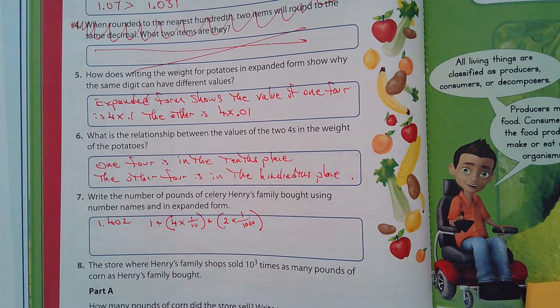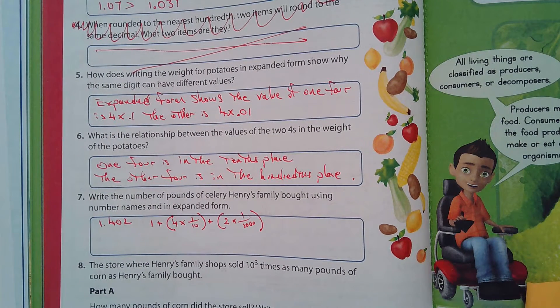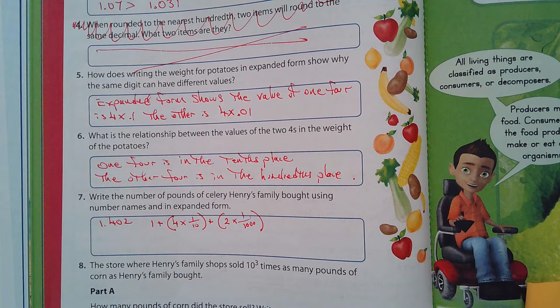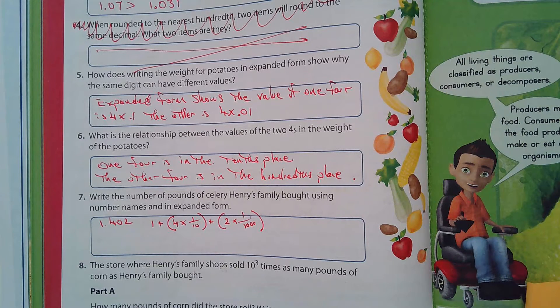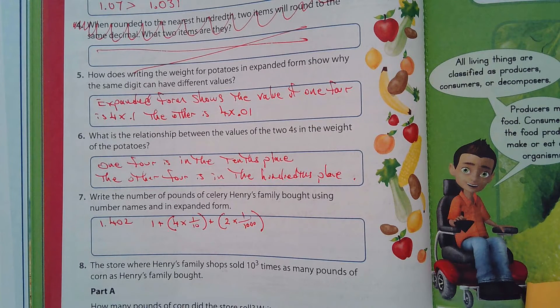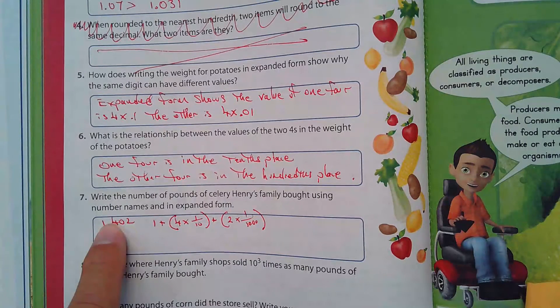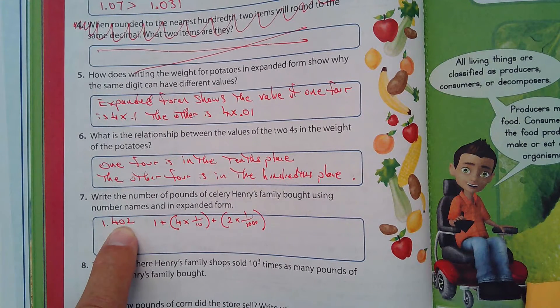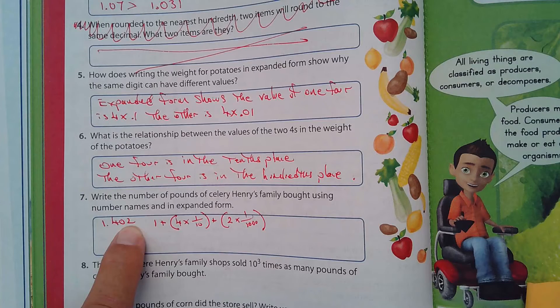And number names, well, if you're listening to this video, I'll just tell you instead of writing it. It's 1 and 402 thousandths, 1 and 402 thousandths, okay?